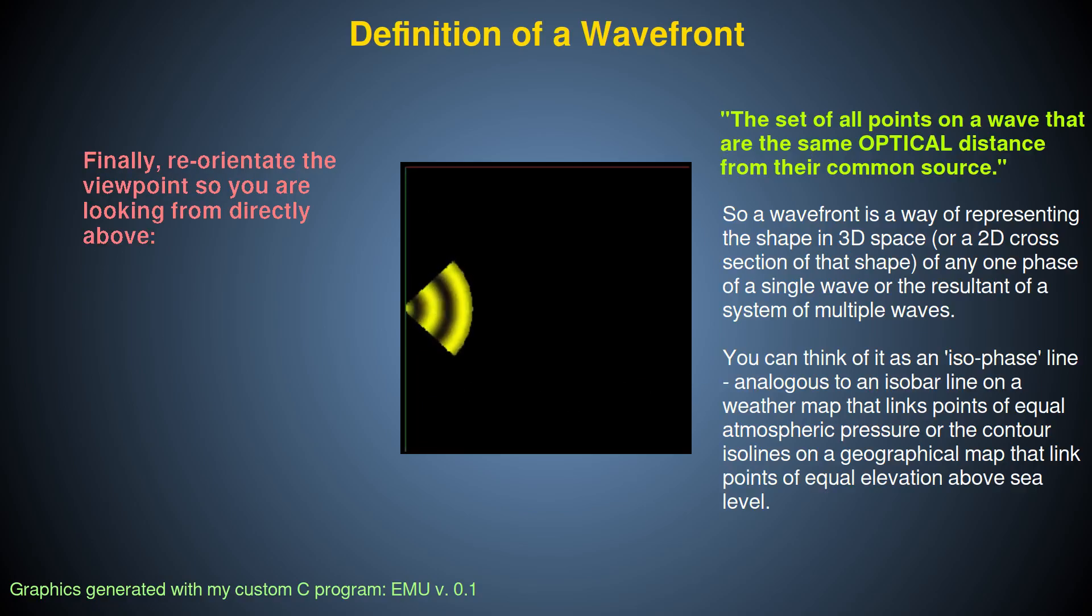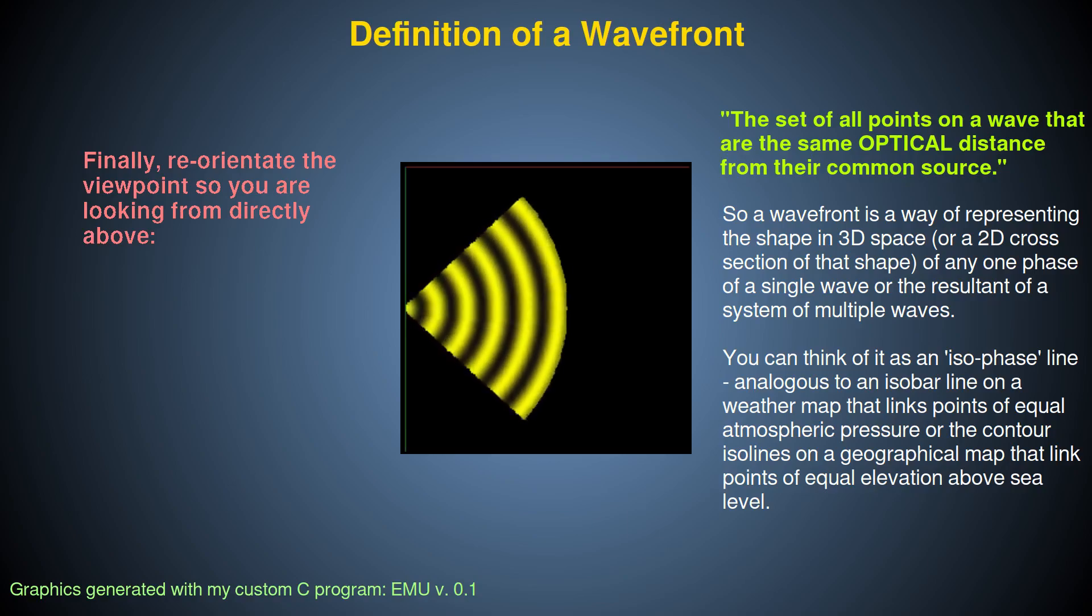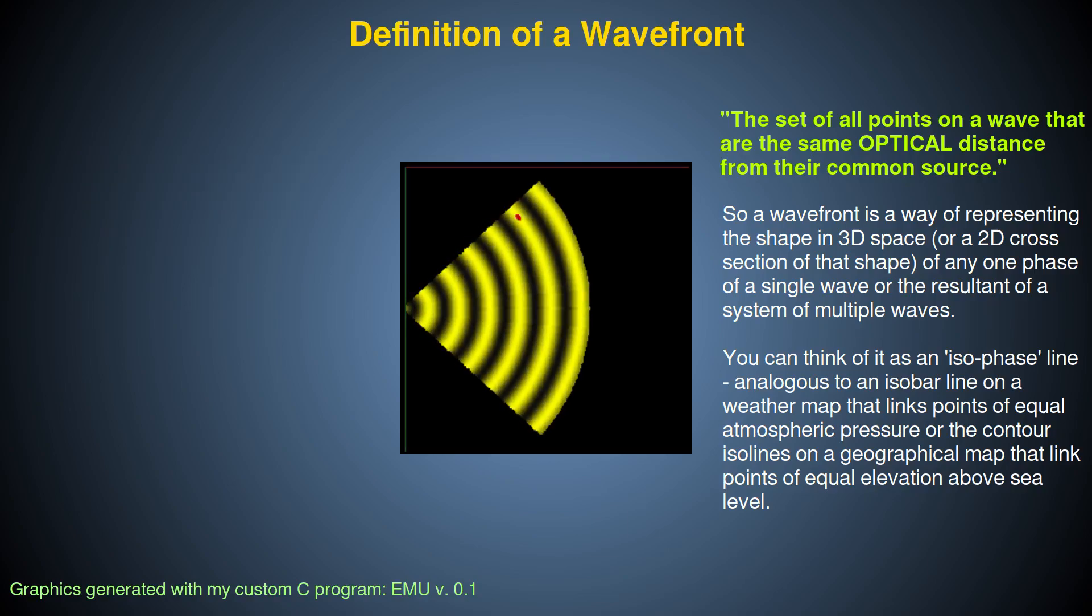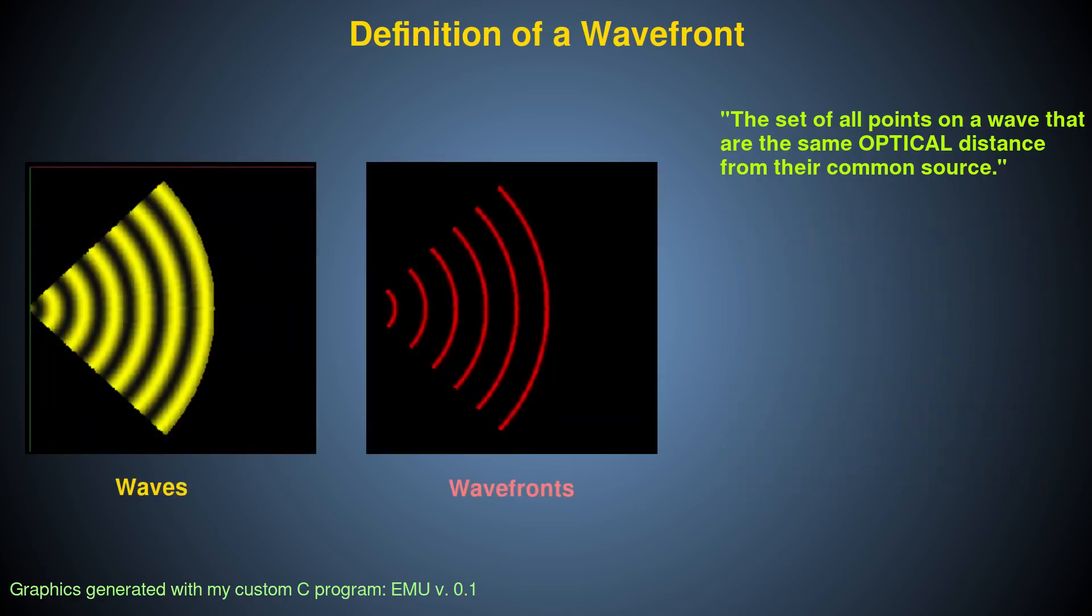A wave front is defined as the set of all points on a wave that are at the same phase of undulation as each other and which are at the same optical distance from their common source. By definition, therefore, the optical distance between successive wave fronts of a particular phase must be one wavelength.